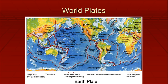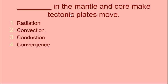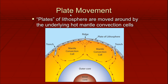Here are the major plate lines. I want to point out this one — this is the Ring of Fire, and the majority of seismic activity occurs along this specific plate. Convection in the mantle and core makes the tectonic plates move — and if you were paying attention, you know the answer is convection. Plate movement is caused by these big convection cells, and we're going to see convection cells in the ocean, in the atmosphere, and here in the geosphere. They are the major drivers of all the dynamic systems we'll be talking about throughout the course.